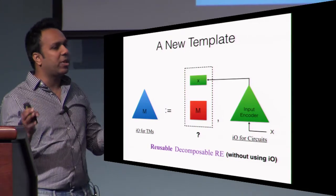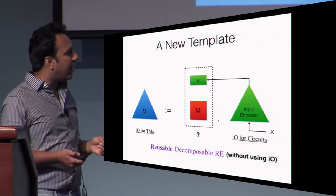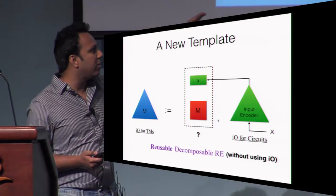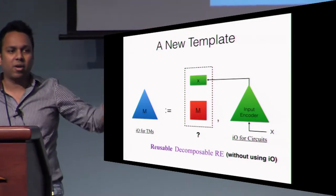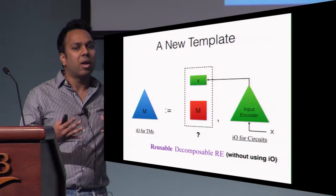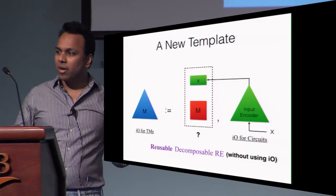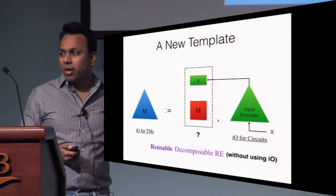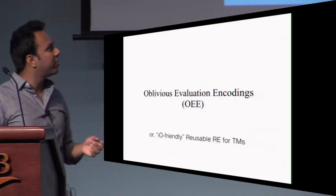Let me elaborate on this notion of reusable decomposable RE. As you are probably familiar, when working with I.O., we always need to modify notions to make them I.O.-friendly. This is our first step: to formalize a notion of reusable decomposable RE which is friendly towards I.O. and facilitates security proofs. We call this oblivious evaluation encodings.